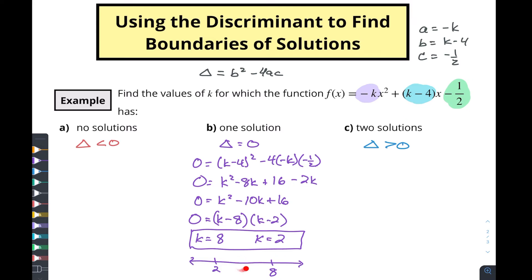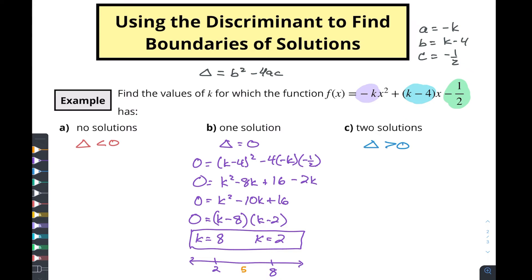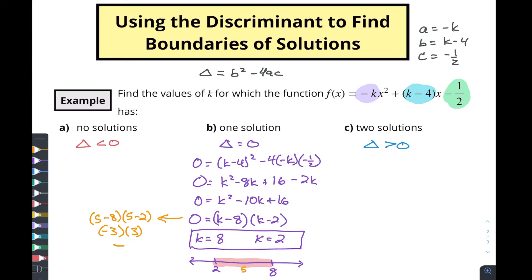So if I want to find out what happens in between here, I want to just pick any number in between. Maybe I take a value of 5. So that's a number in between 2 and 8. If I were to put that into this function, I put 5 in for k, I'm going to have 5 minus 8, and I'm going to have 5 minus 2. So I'm going to have negative 3 times a positive 3. And so that's going to give me a negative number. So that means in between these two values, I'm going to end up with a negative discriminant. My k values are going to produce a negative value. So where does this thing have no solutions? It has no solutions when k is between 2 and 8.